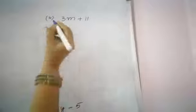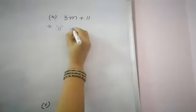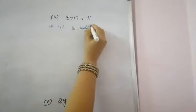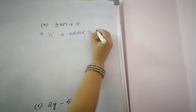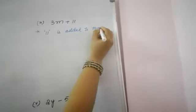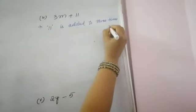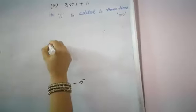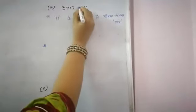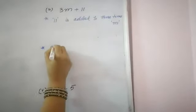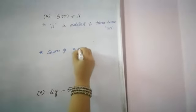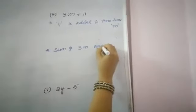For the expression 3M plus 11, first statement: 11 is added to thrice, or three times, M. Second statement — the fundamental operation here is addition — sum of 3M and 11.